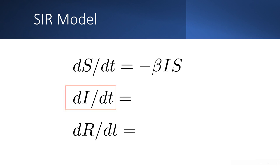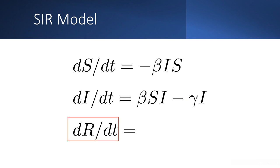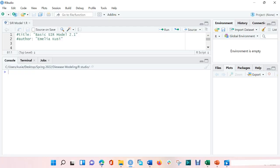We will also need a differential equation for dI/dt to model the number of individuals who are infected over time. This depends on the proportion of susceptibles who get infected minus the proportion of infected people that recover from the disease. The new variable introduced in this equation is gamma, which represents the recovery rate. We will also need a differential equation for dR/dt for the number of individuals who recover over time, which is dependent on the proportion of infected people who recover from the disease.